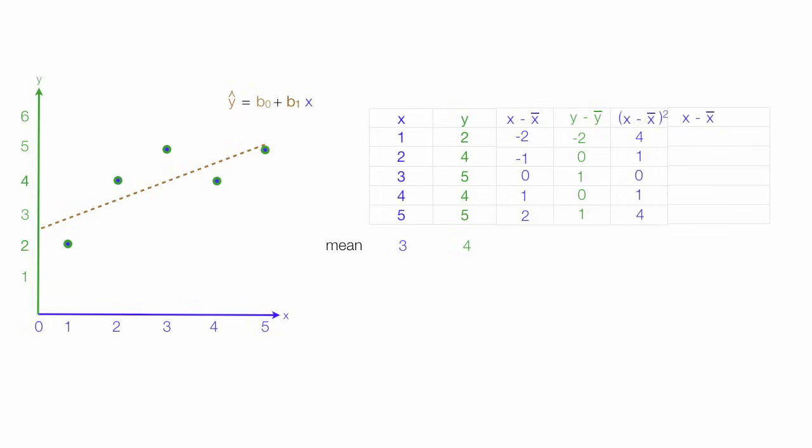Now I take it and I make another column. And it's the x minus the mean and y minus the mean columns. We're going to take this column times this column. Which is, the first row is negative 2 times negative 2, which is 4.